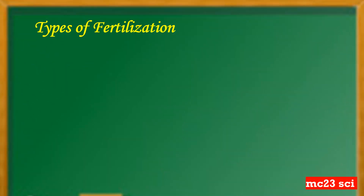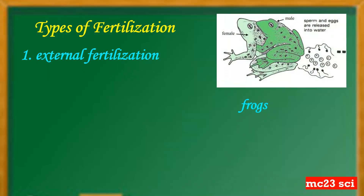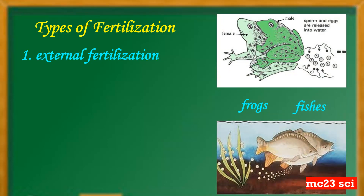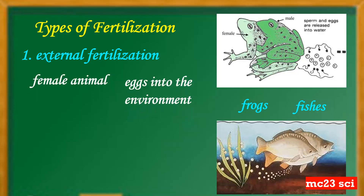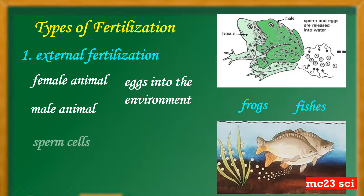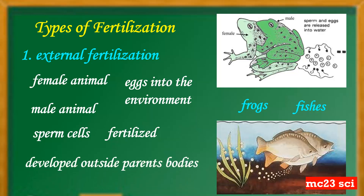The types of fertilization: number one is external fertilization. Frogs and fish are examples of external fertilization, wherein the female animal releases eggs into the environment and the male animal releases sperm cells to fertilize the egg. The fertilized egg develops outside the parent's body.